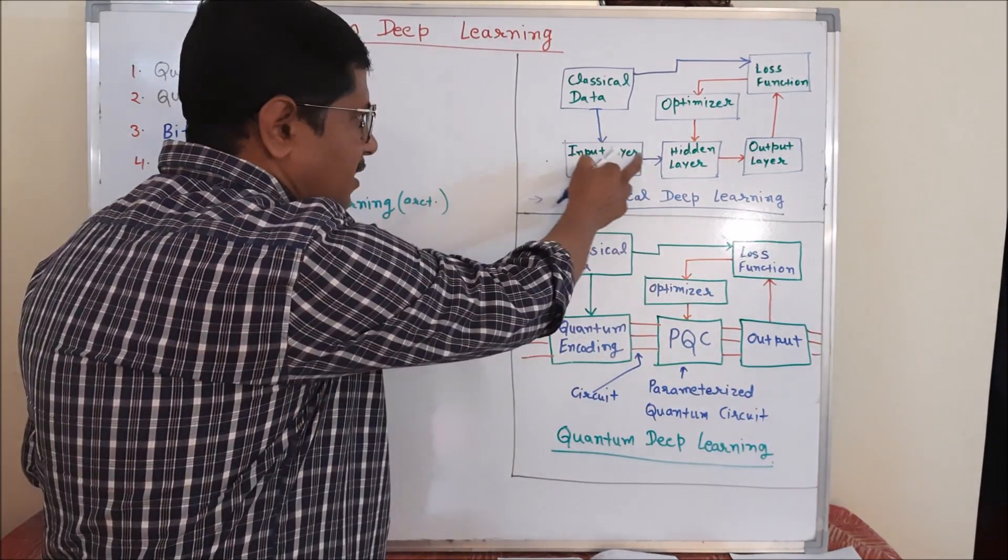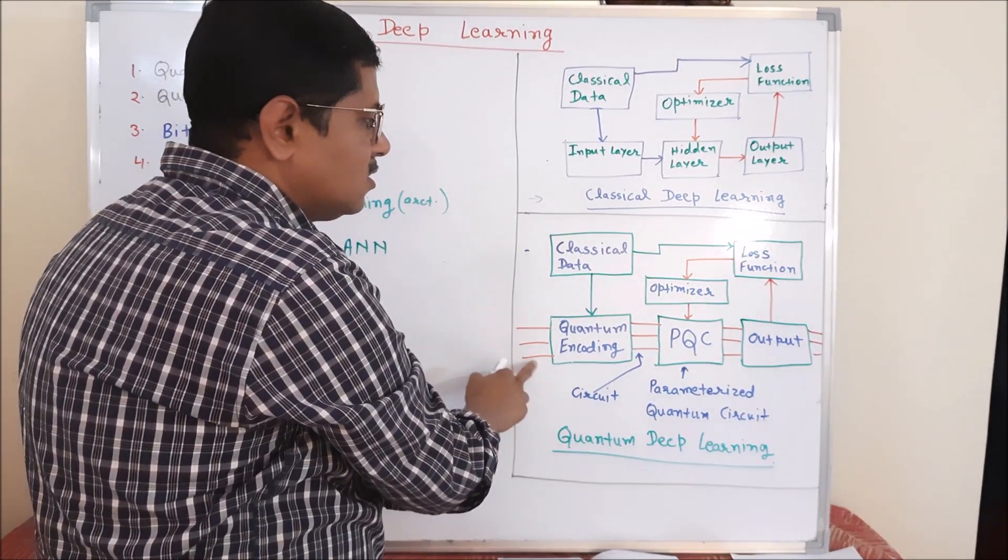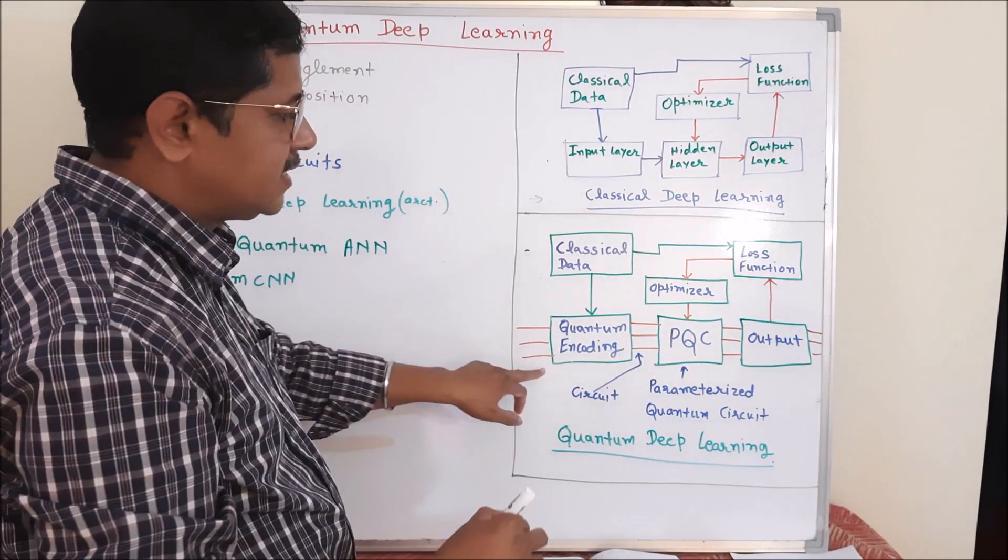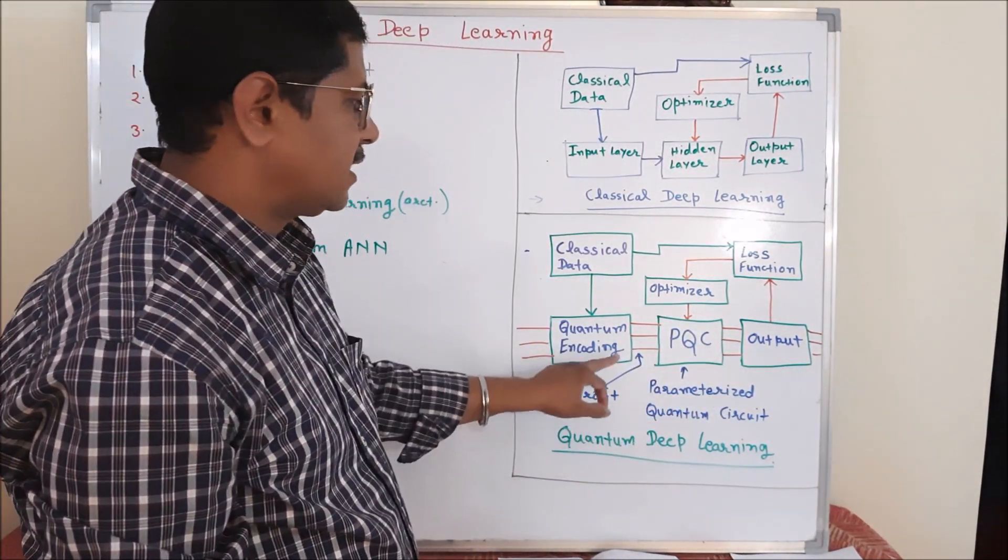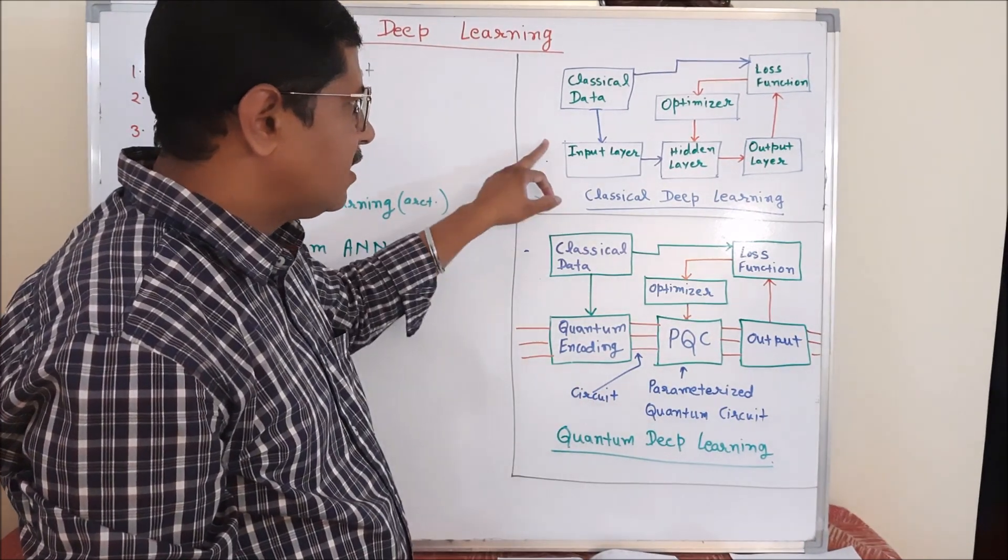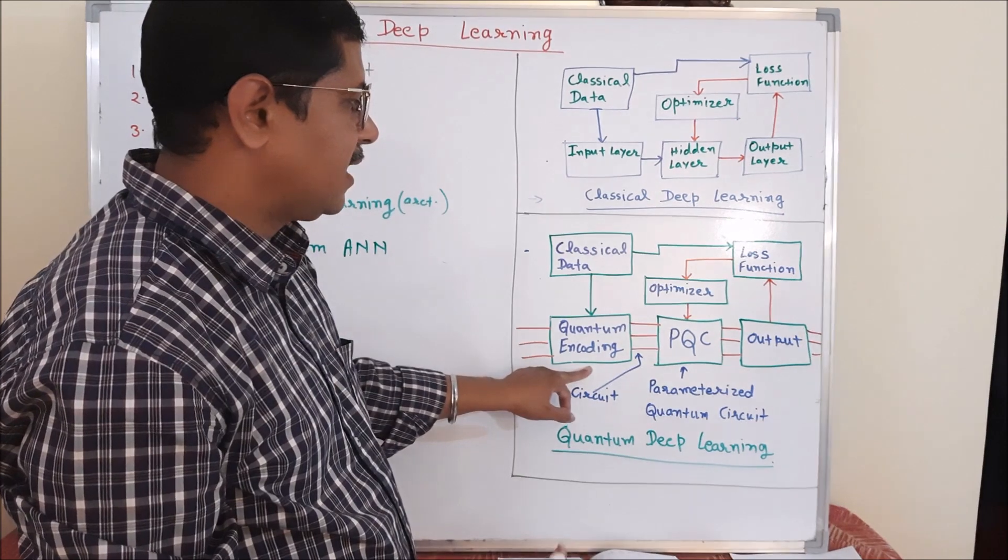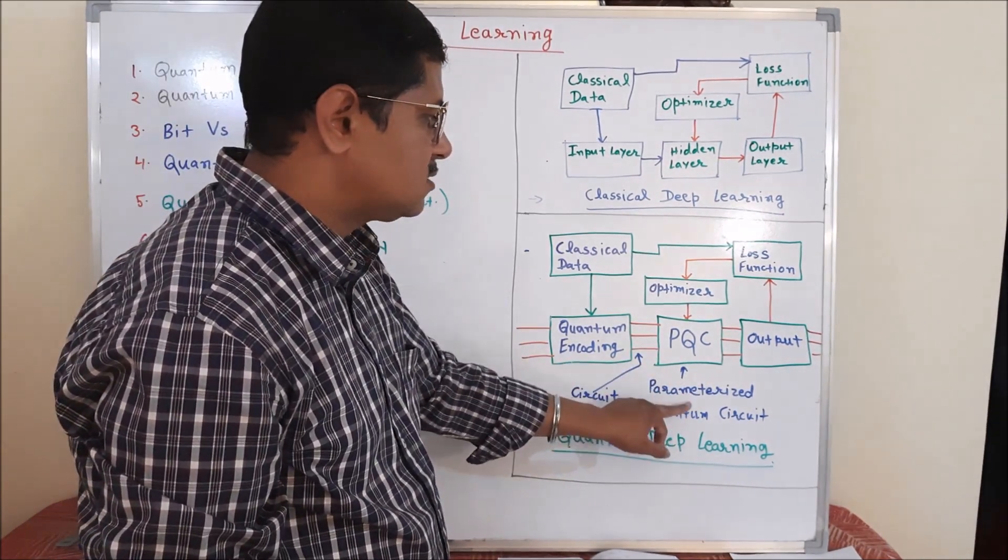So this is different. This is network, this is circuit. We pass it through the quantum circuits and we say it like a quantum circuit. Once we do the input operations like quantum encoding by converting data into qubit, we pass it through the parametrized quantum circuit.